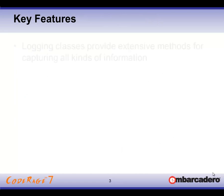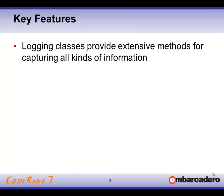Some key features of CodeSight include specially designed logging classes to capture the information we're interested in in our application code. Traditional logging functionality tends to use simple procedures or function calls to take a string element and log that to some place — typically a list box, an output debug window, or possibly a text file. The logging classes give us a lot more control over what we capture.